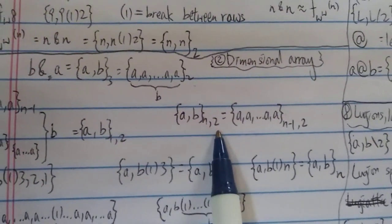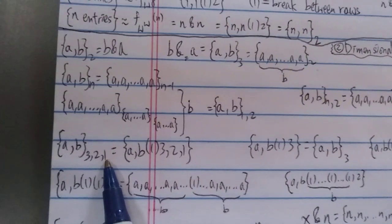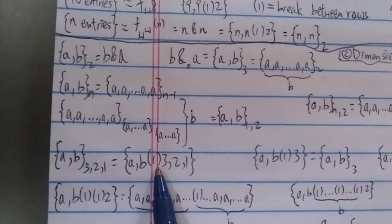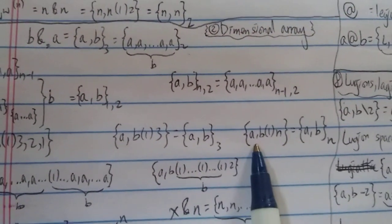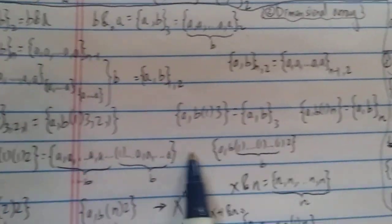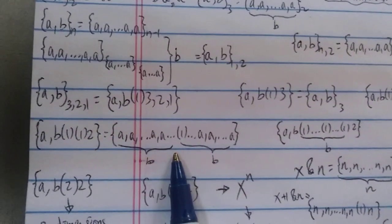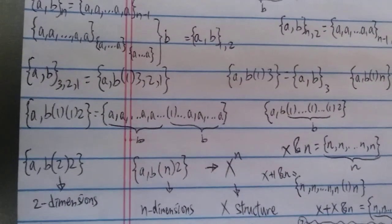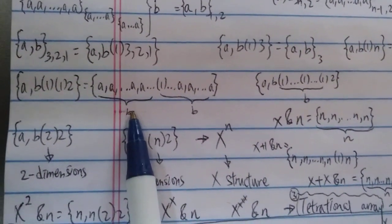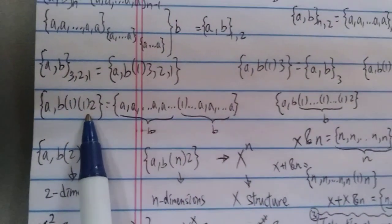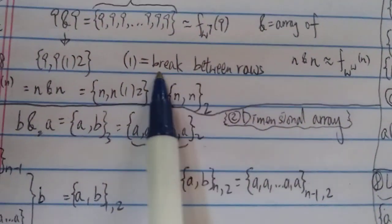In general {a,b,n,2} equals something extended, and of course you can continue with three subscripts. {a,b,1,3} equals {a,b,3} and {a,b,1,n} equals {a,b,n}. Feel free to pause the video or look it up on the Wikipedia page. {a,b,1,1,2} equals a, a...a with b number of copies — again the 1 here acts as a break between rows.